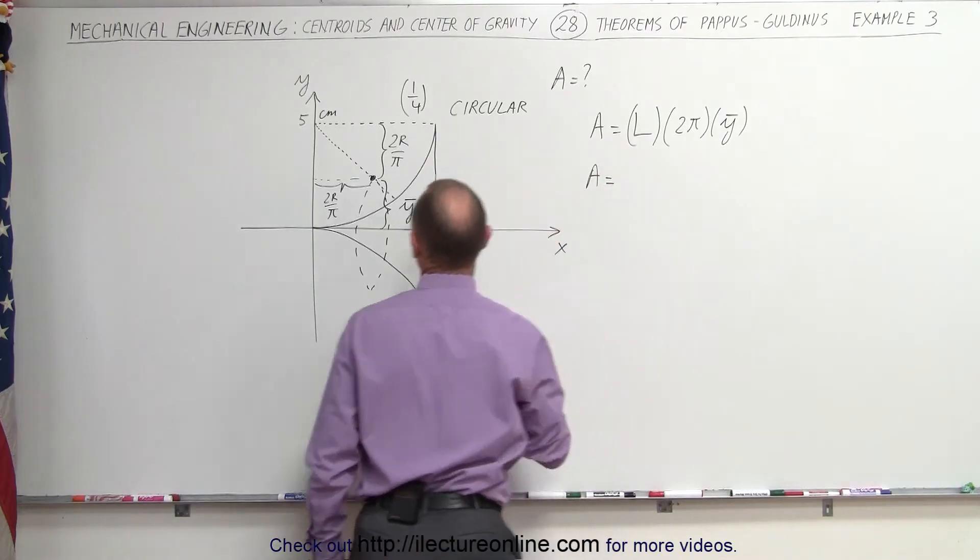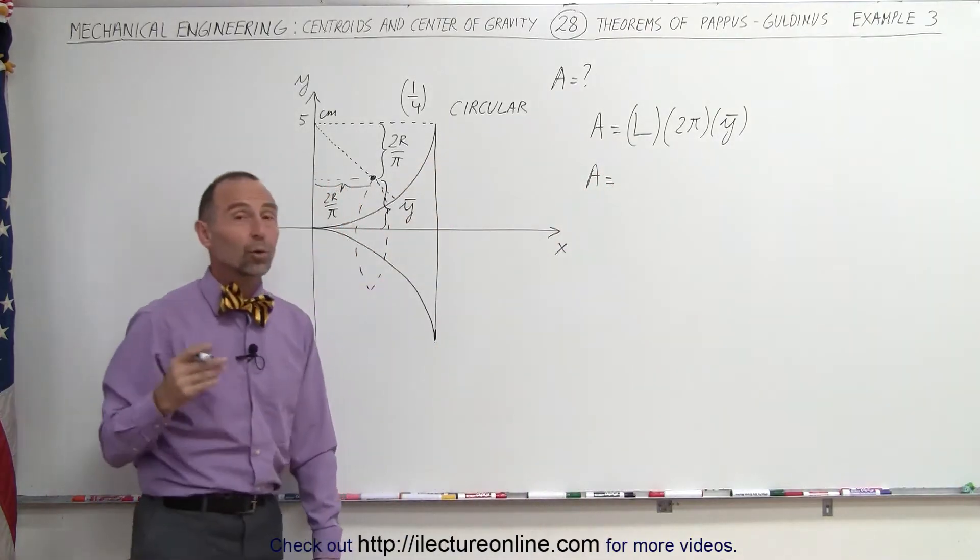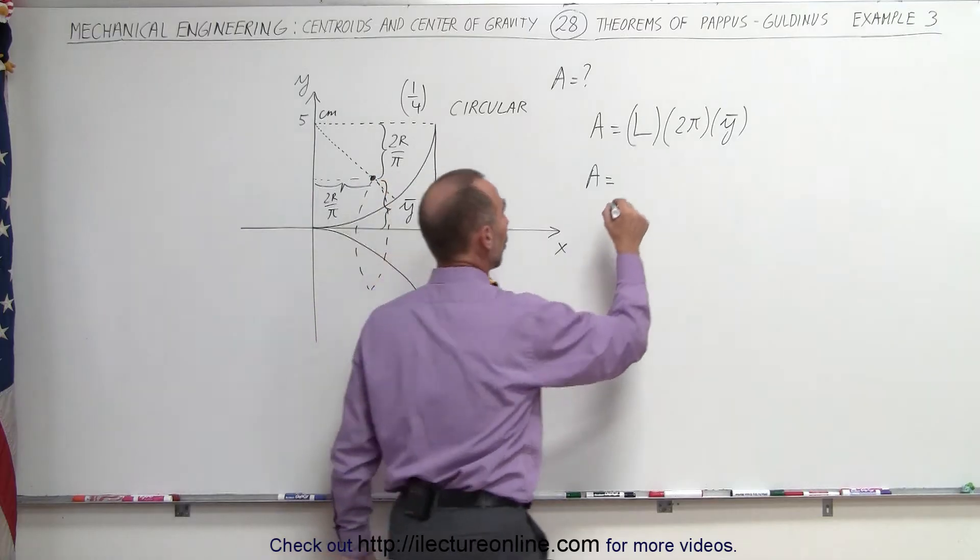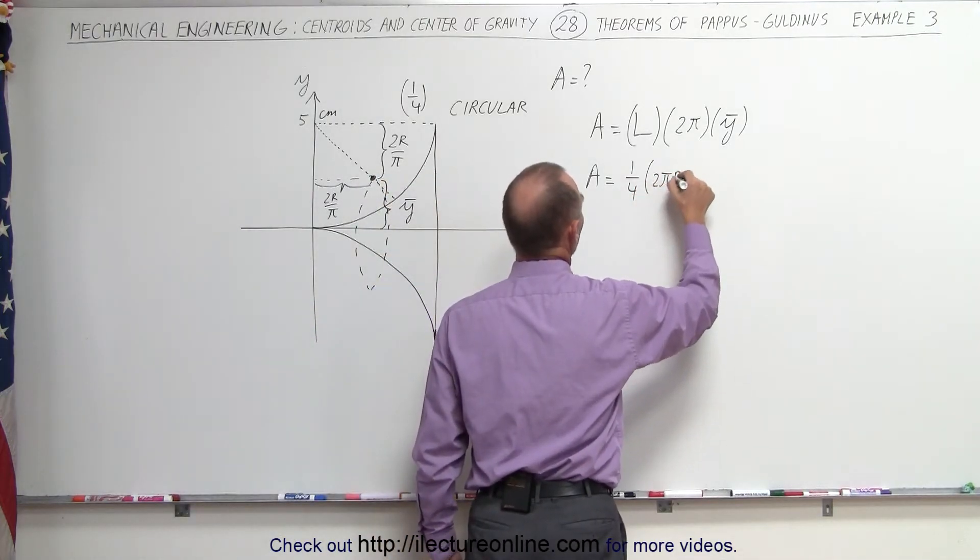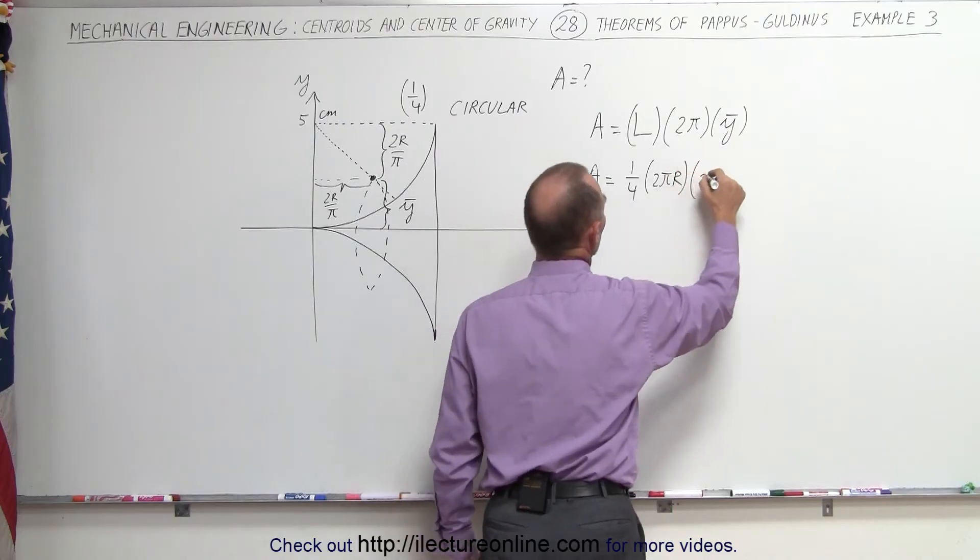Area equals the length of the curve. It's a quarter of a circle. That means it's a quarter of the distance of a whole circle, one quarter. The distance 2πr of a full circle. We multiply that times 2π.